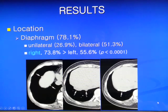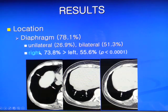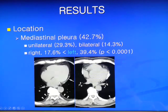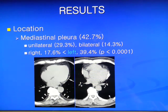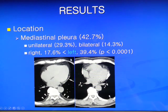The diaphragm was the second most common site. Diaphragmatic plaques were unilateral or bilateral, and the right diaphragm was more commonly involved than the left. Mediastinal pleural was involved in 42%, either unilateral or sometimes bilateral. In contrast to diaphragmatic plaques, mediastinal pleural was more commonly involved on the left side.